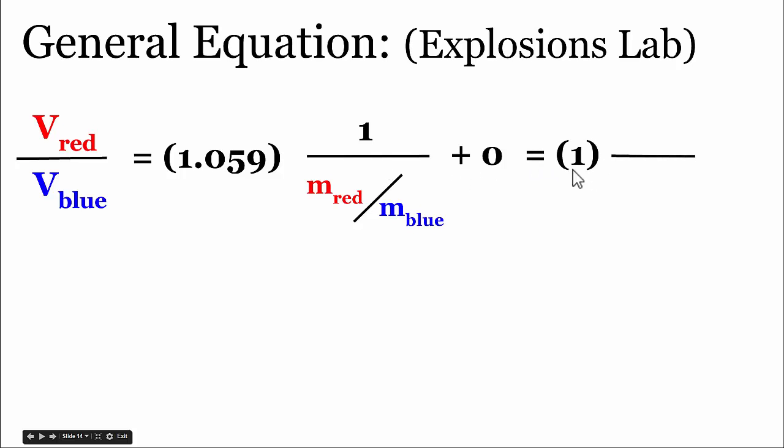It turns out to be, or we can generalize it to approximately 1. And the slope didn't have any units. It was unitless.